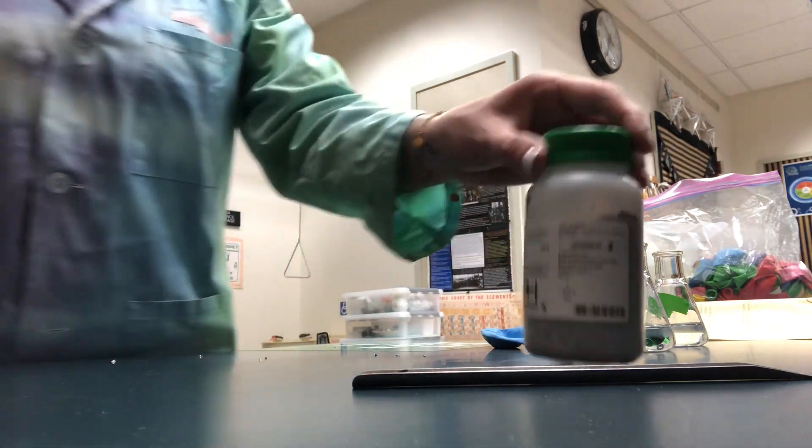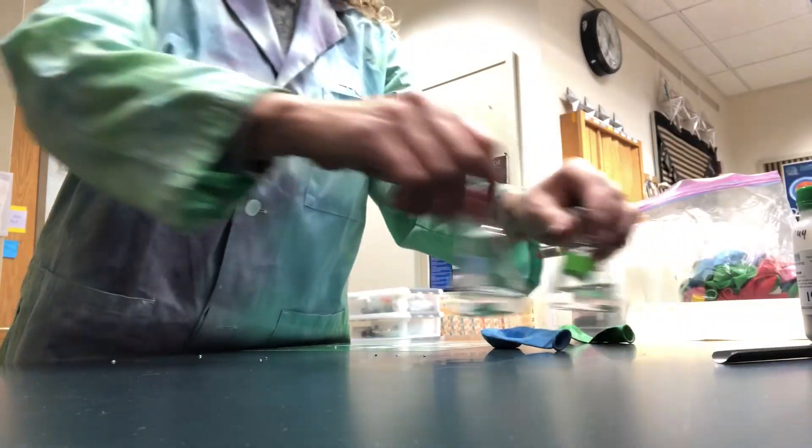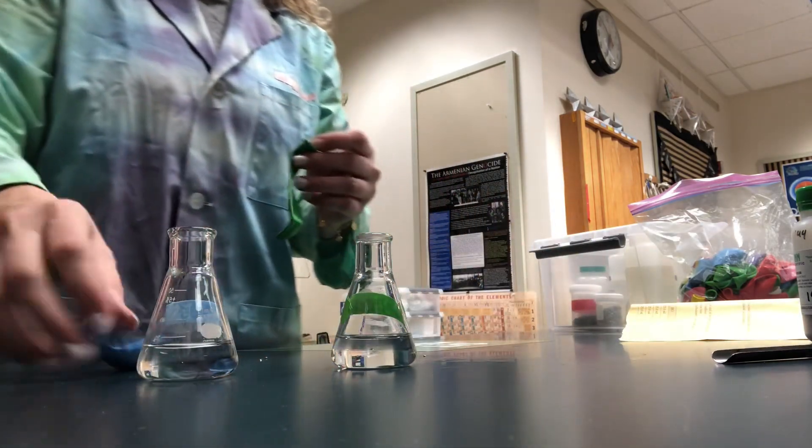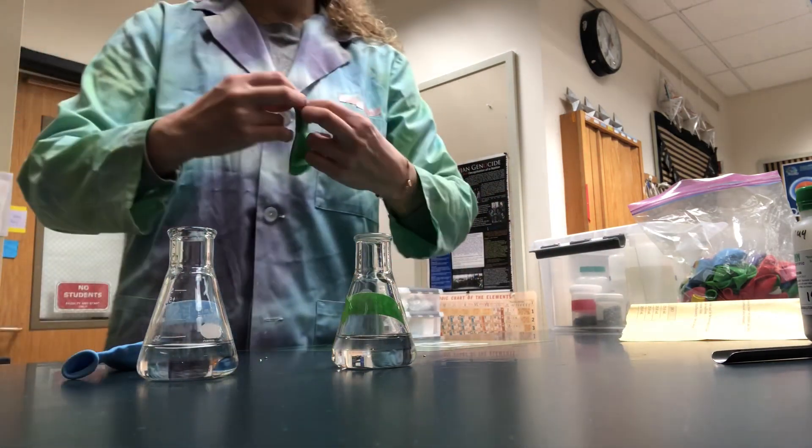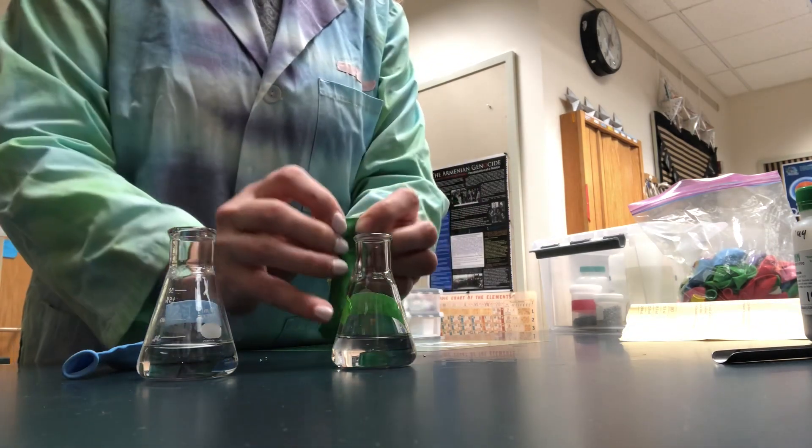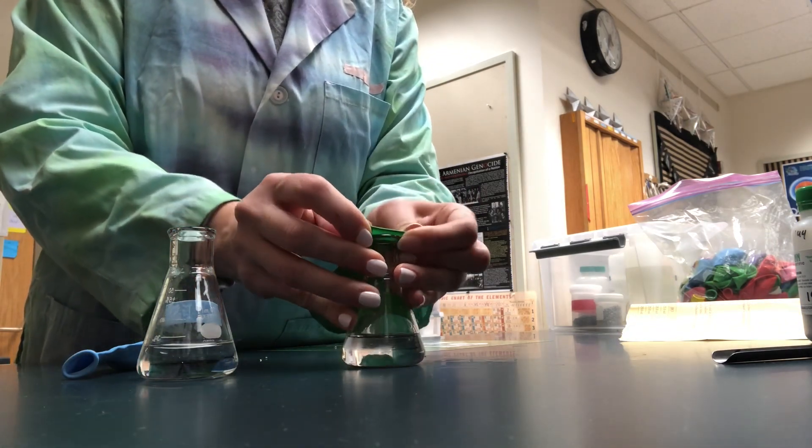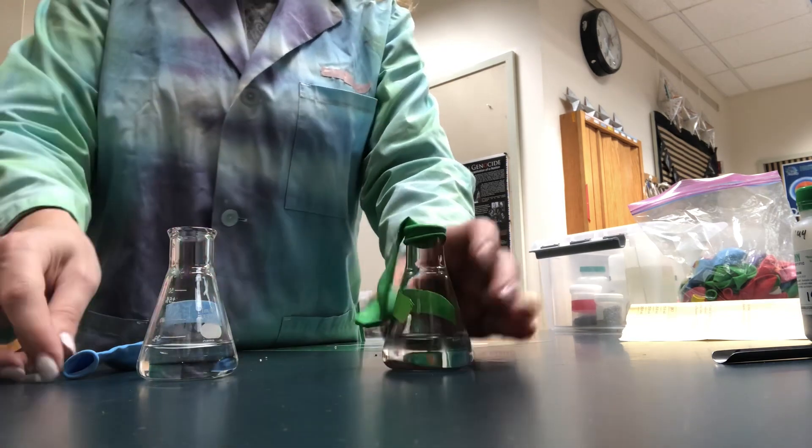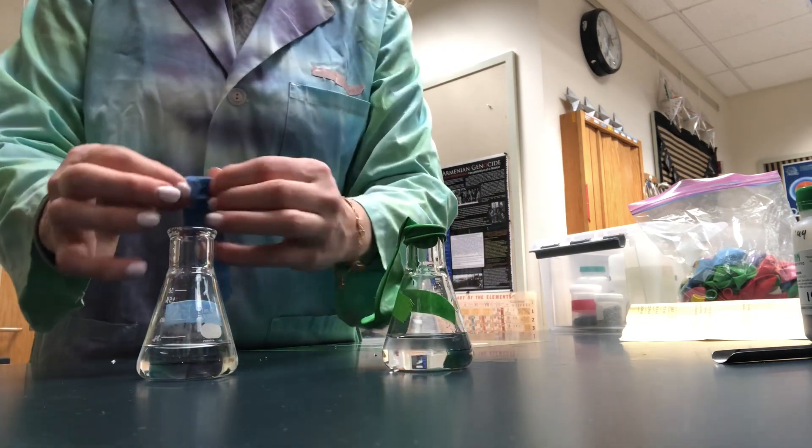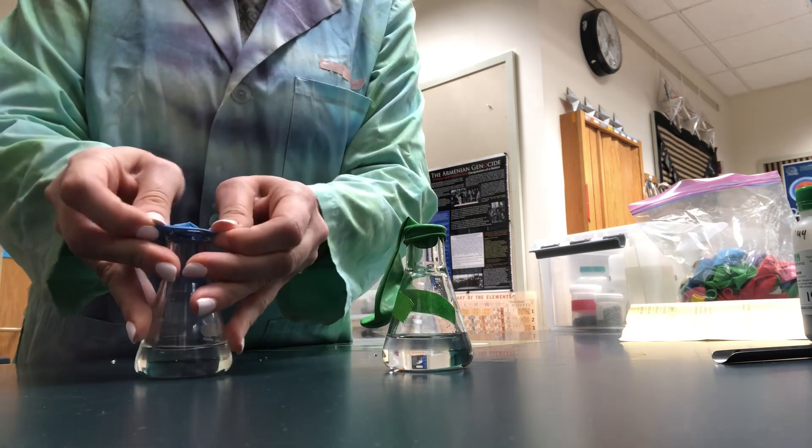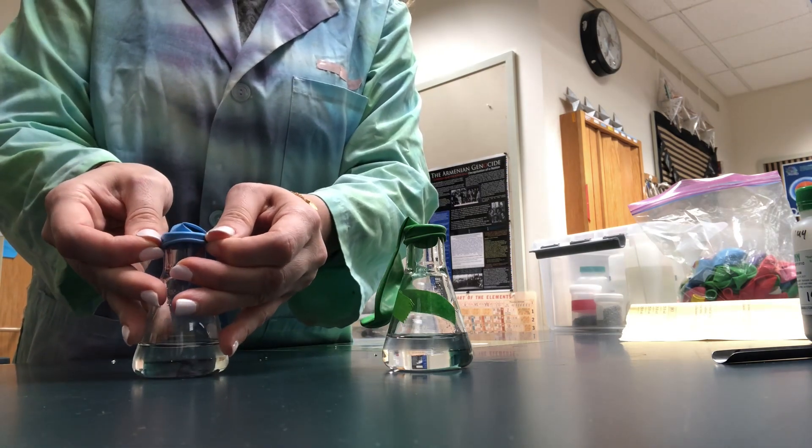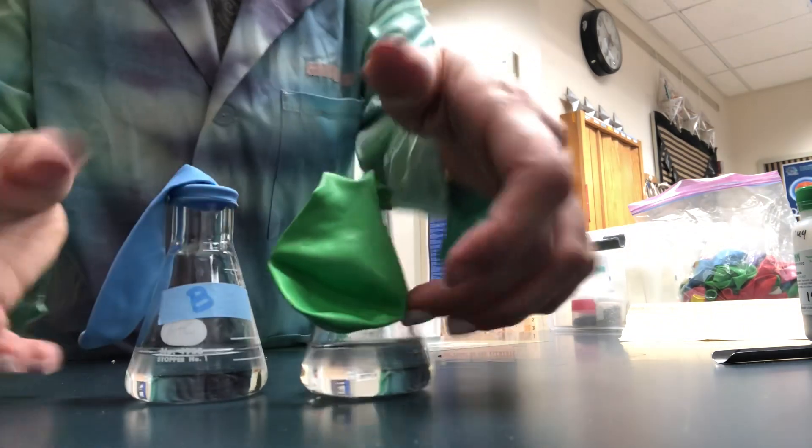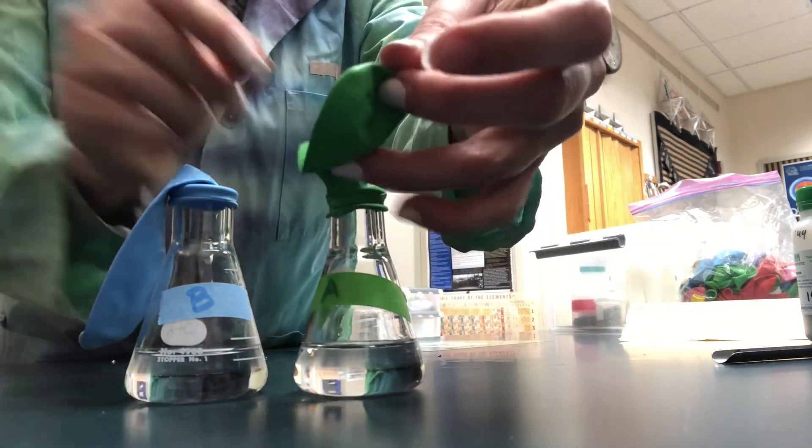At this point now, we are going to set up our two Erlenmeyer flasks with our balloons. And it helps if you have a lab partner to do this with. But I'm just going to gently roll the top of my balloon over while letting the rest of it hang. And the same thing with this, I'm going to gently roll the top of my balloon over. Careful not to break the balloon. And then at the same time, I'm going to release the magnesium into the hydrochloric acid.